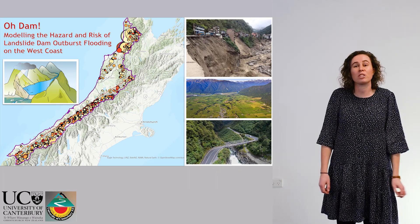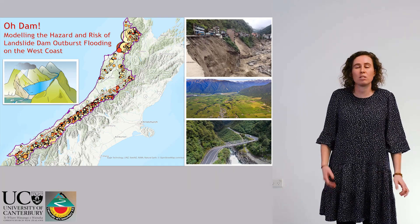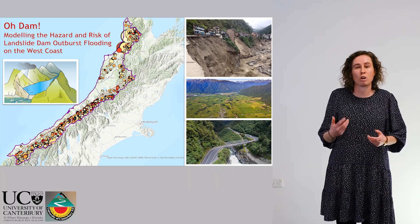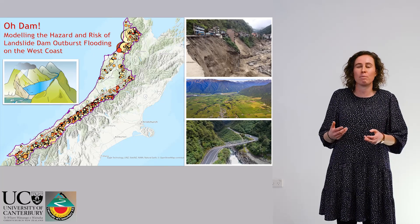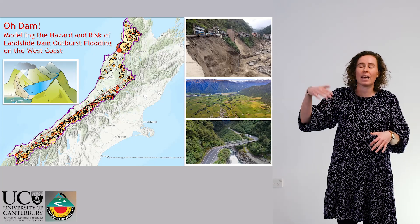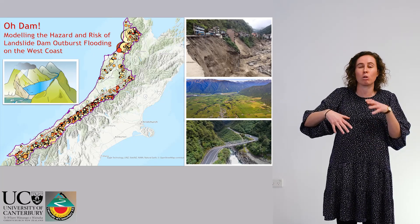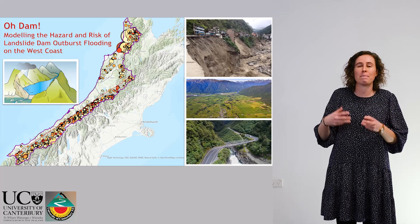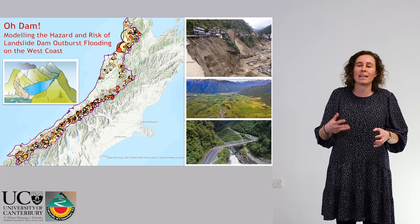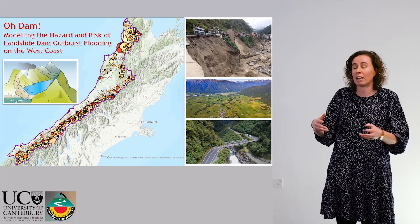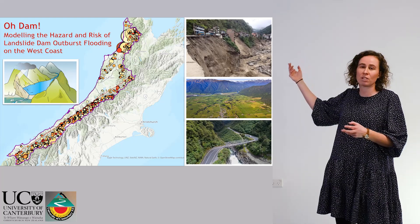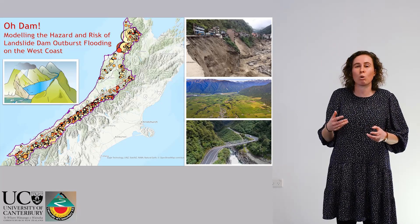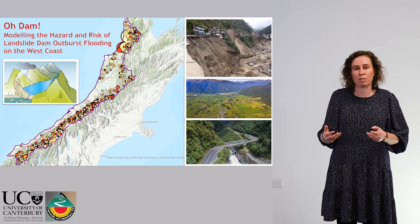Hi, I'm Jane and my project is modelling the hazard and risk of landslide dams on the west coast of New Zealand. A landslide dam forms when a landslide comes down and blocks the river, forming a lake. These lakes can be massive — they can take up the entire valley, as you can see in this diagram. Eventually they burst and cause what we call an outburst flood.